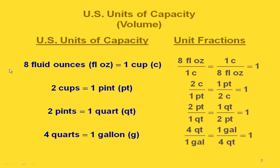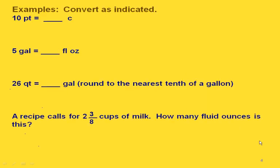We have 8 fluid ounces equals 1 cup, 2 cups equals 1 pint, 2 pints equals 1 quart, and 4 quarts equals 1 gallon. Here are the unit fractions that go along with all of those. We're going to be converting from one unit to another, so we will be using those unit fractions to do that.